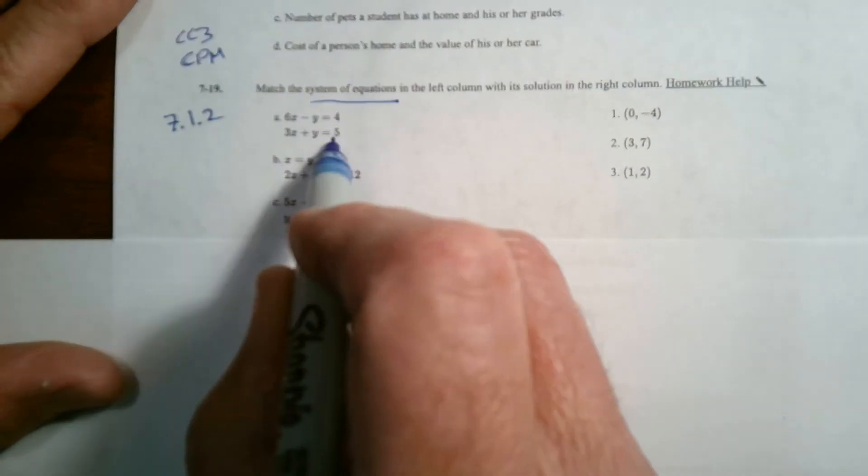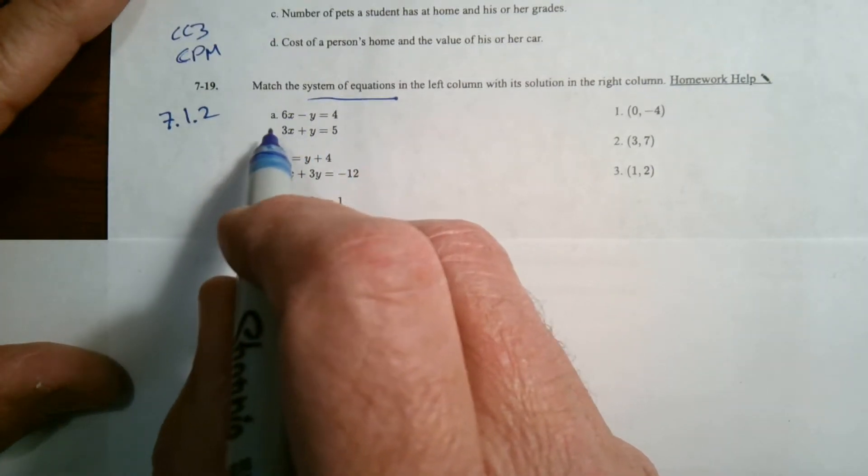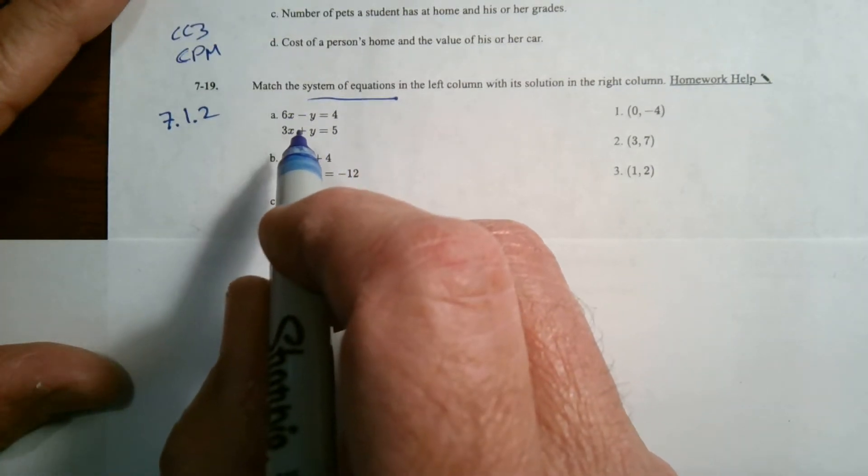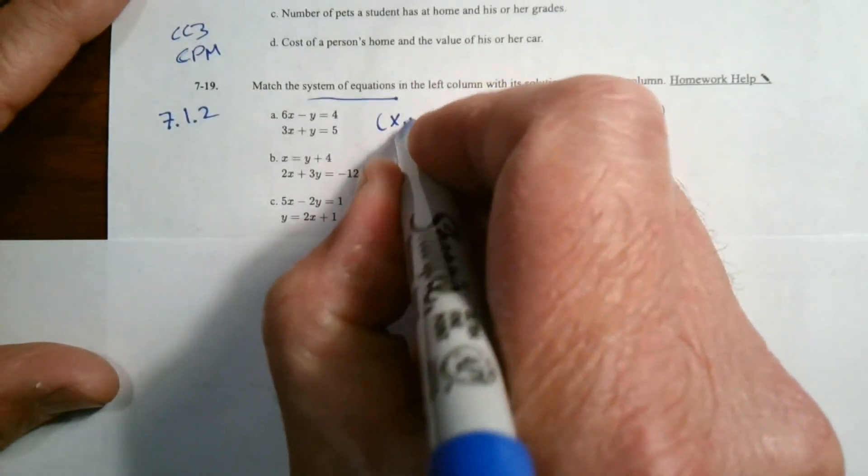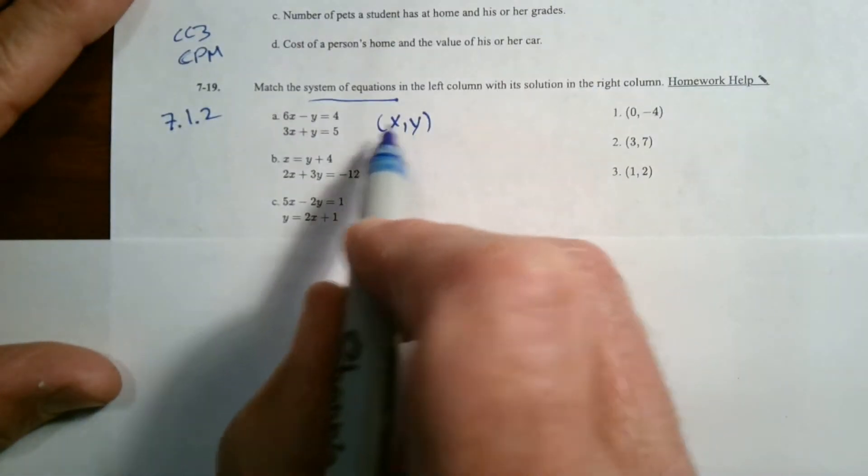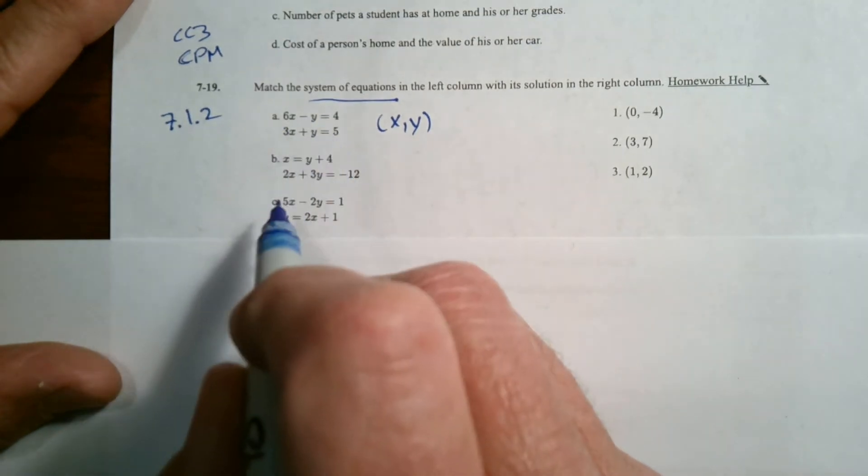Systems of equations are two equations that we are looking for the one solution, the x and y solution, the x-y pair that works for both equations.